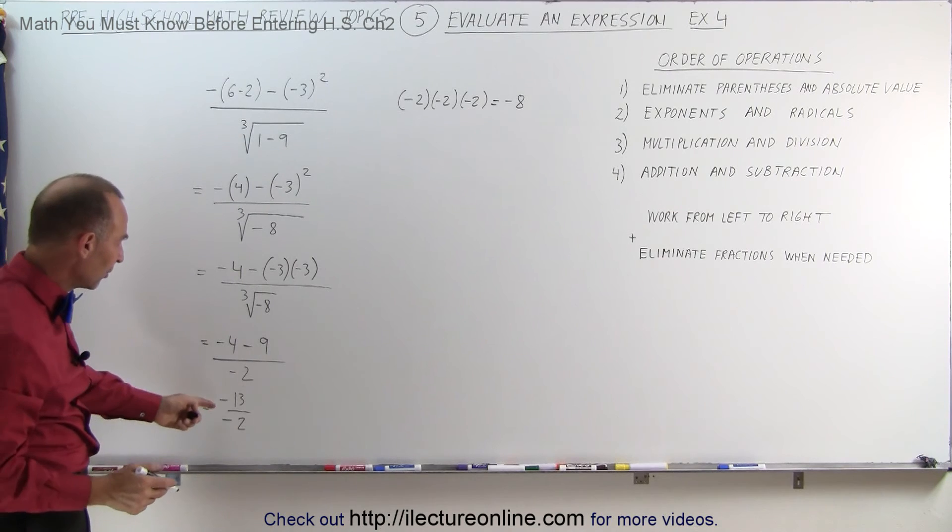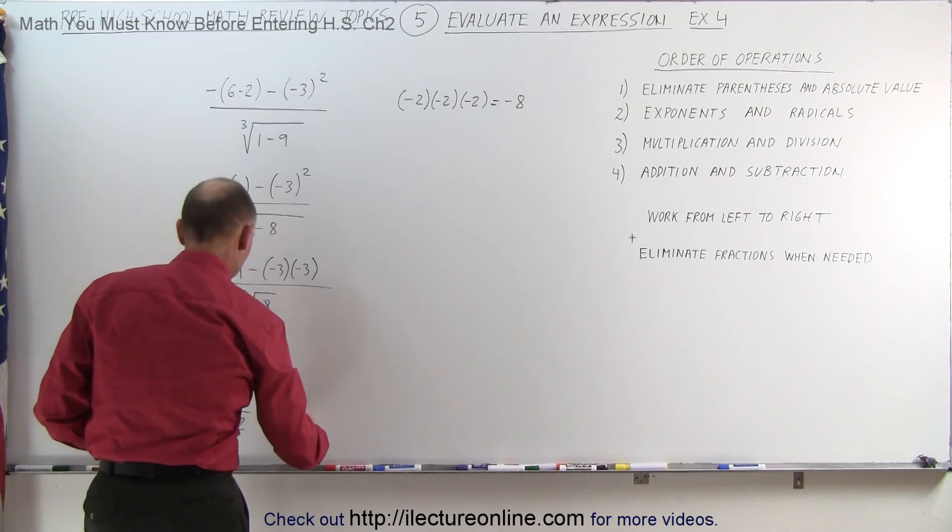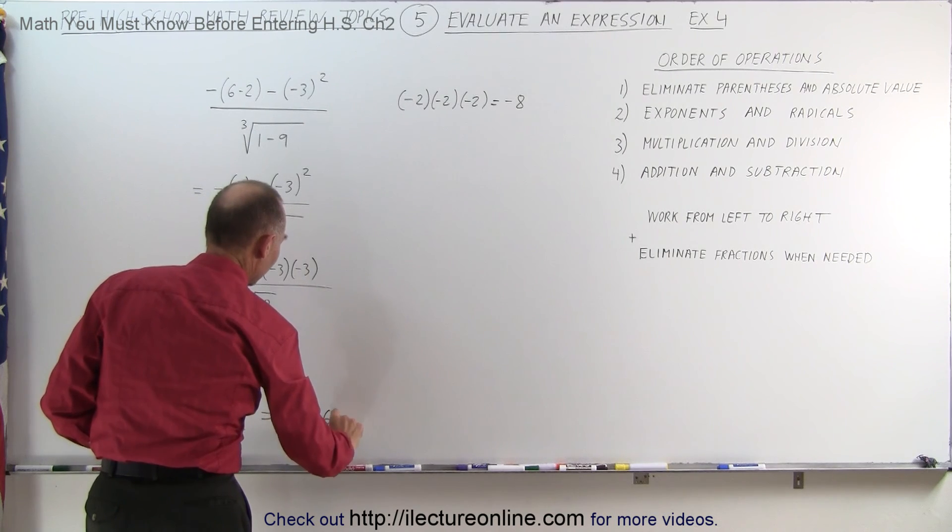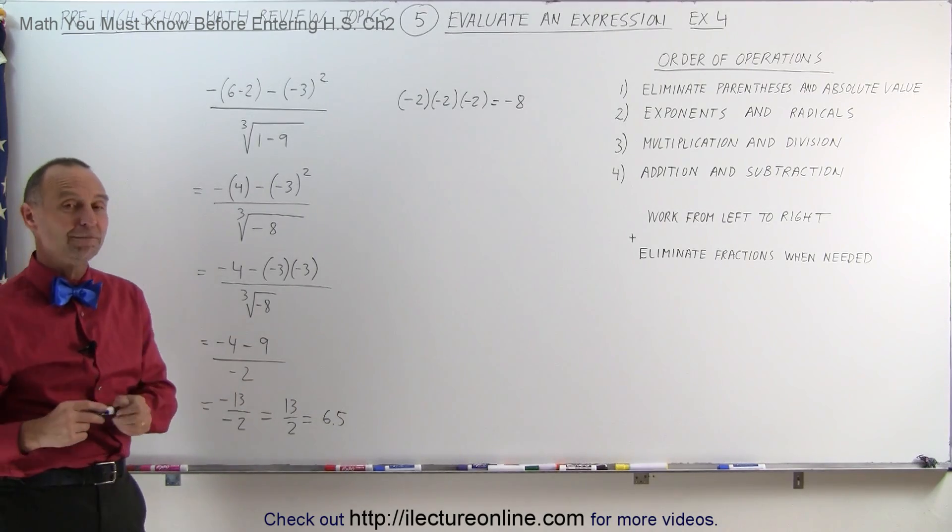when we have one negative number divided by another negative number, that cancels out. So this is equal to 13 divided by 2, or it could be written as 6.5. Either way, that's the answer to this problem. That's how it's done.